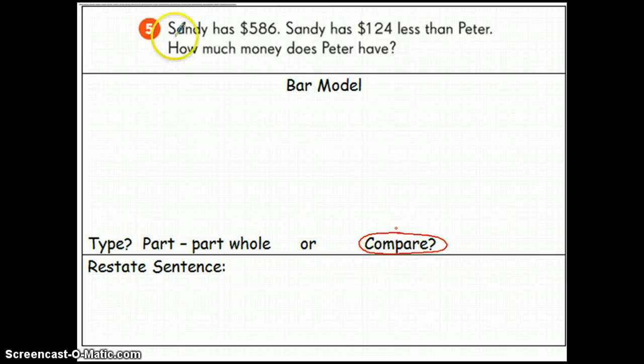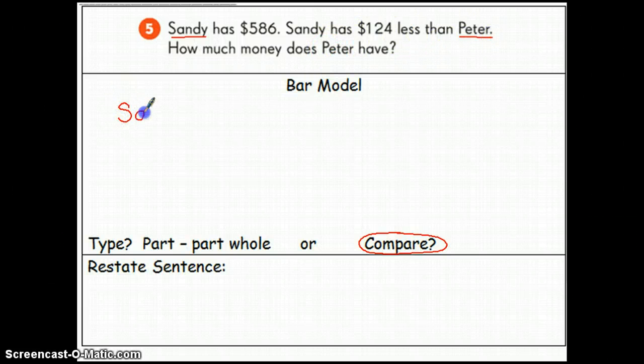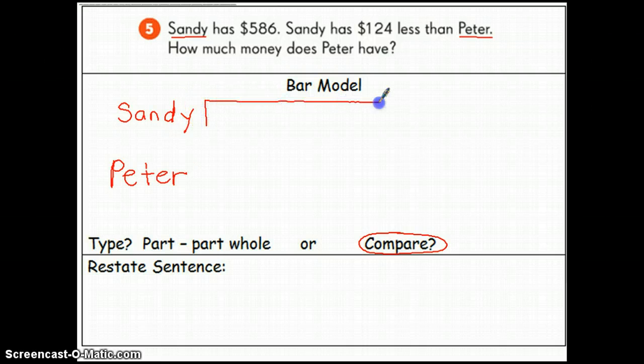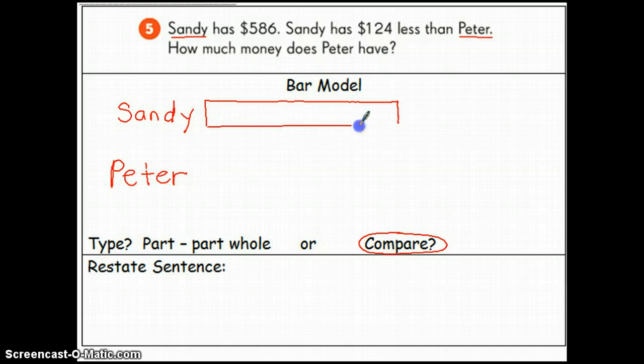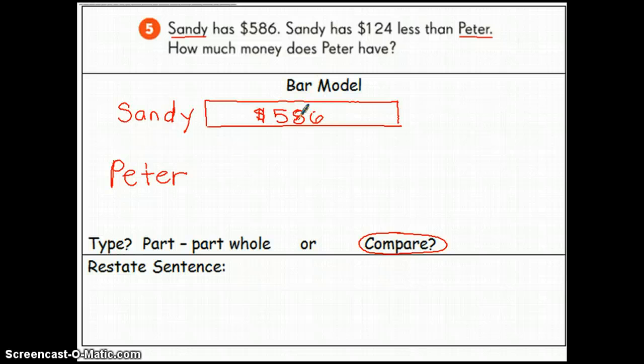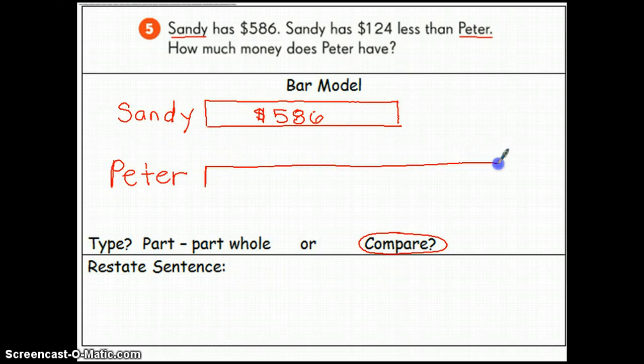What I need to do to start out here is write the two people's names. We have Sandy and Peter. Sandy has $586, so I'm going to draw her bar. Then I'm looking back in the word problem, and she has $124 less than Peter. So, her bar is actually going to be shorter than Peter, so I have to draw a longer bar for Peter.